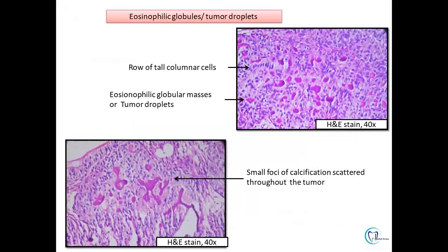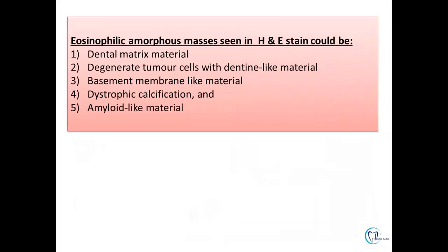Other areas exhibit eosinophilic globules and tumour droplets. There are rows of tall columnar cells resembling pre-ameloblasts, and these eosinophilic globules can represent failed induction. The eosinophilic globular masses or tumour droplets may represent metaplastic calcifications scattered throughout the tumour mass. These eosinophilic masses seen on H&E can be dental matrix material, degenerative tumour cells, basement membrane-like material, or dystrophic calcifications.